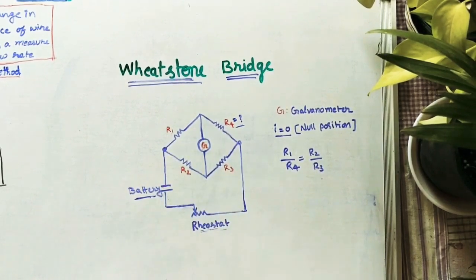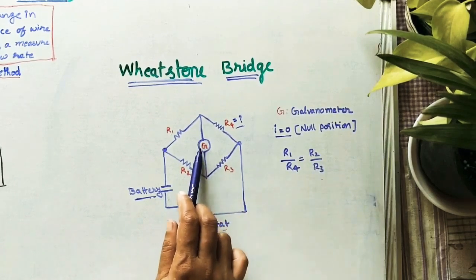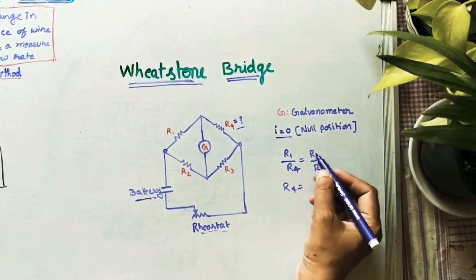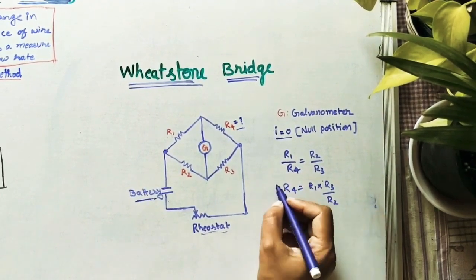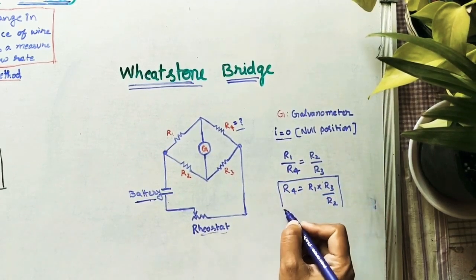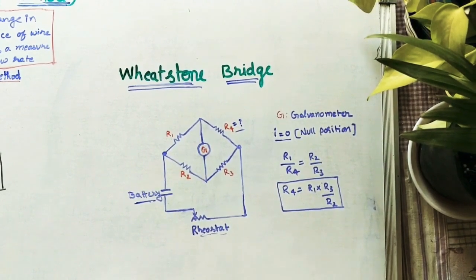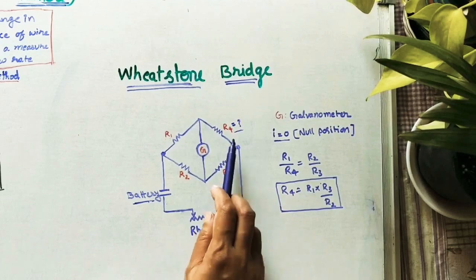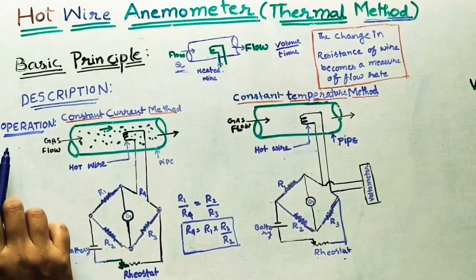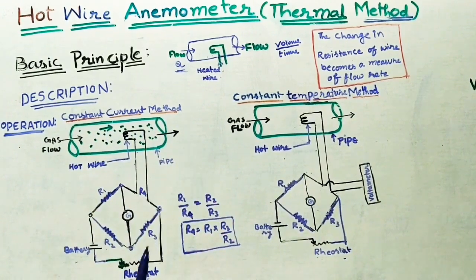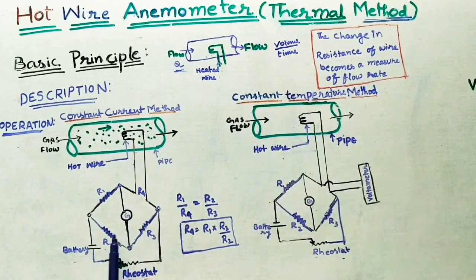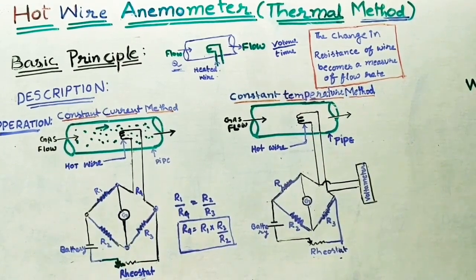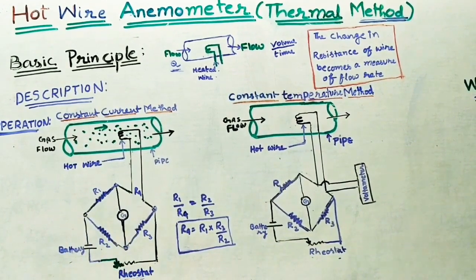This is the main use of the Wheatstone bridge for finding resistance. The coil we connect will change its resistance as its temperature changes. Now let us take the working operation of the constant current method. We take one Wheatstone bridge and supply some current to it using a battery and rheostat. R1, R2, R3, and R4 are the resistances, and because of the current supply, all are getting heated.